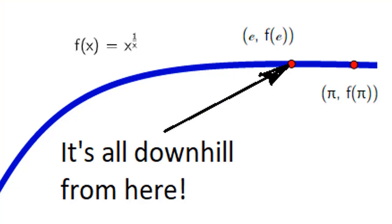Previously, we saw that the x-th root of x is decreasing after x equals e. So when x equals pi, it's on the downswing, and the pi-th root of pi is less than the e-th root of e.